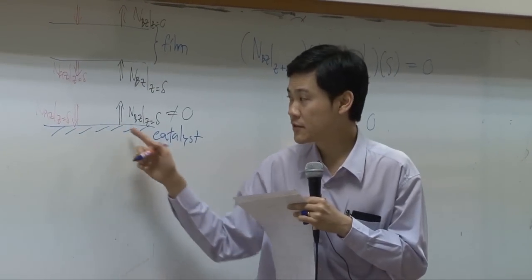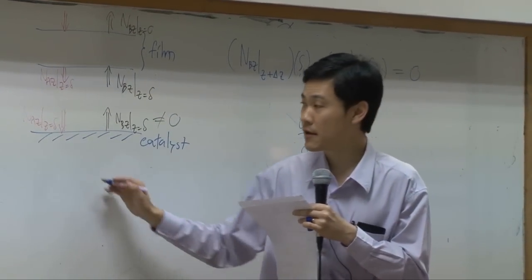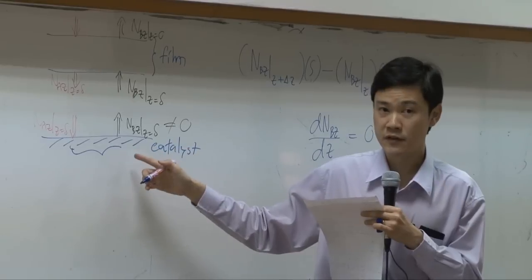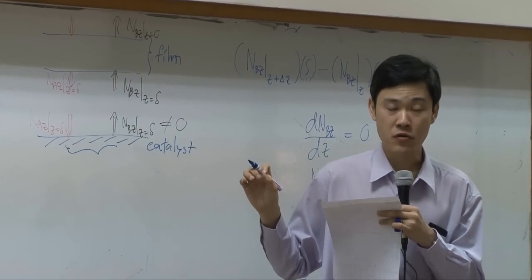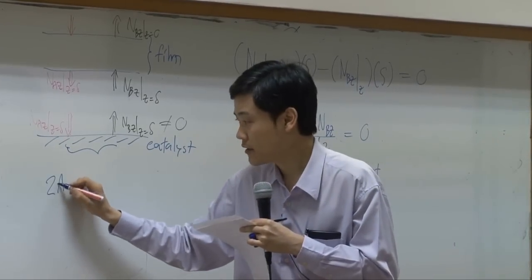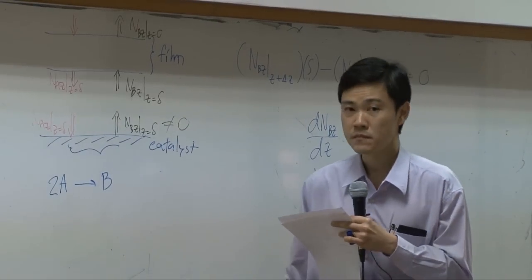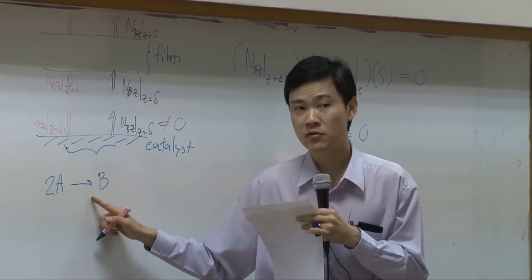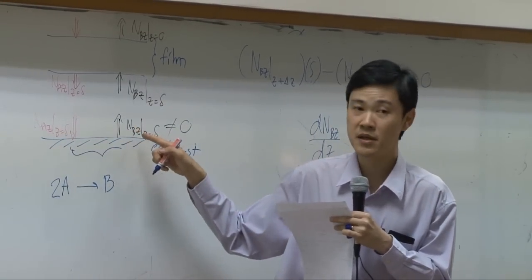Okay? However, these two fluxes are related. Why? Because the reaction on the surface here is controlled by stoichiometry ratio, 2A going into B. So we can use stoichiometry ratio to correlate it between N_A_Z and N_B_Z.